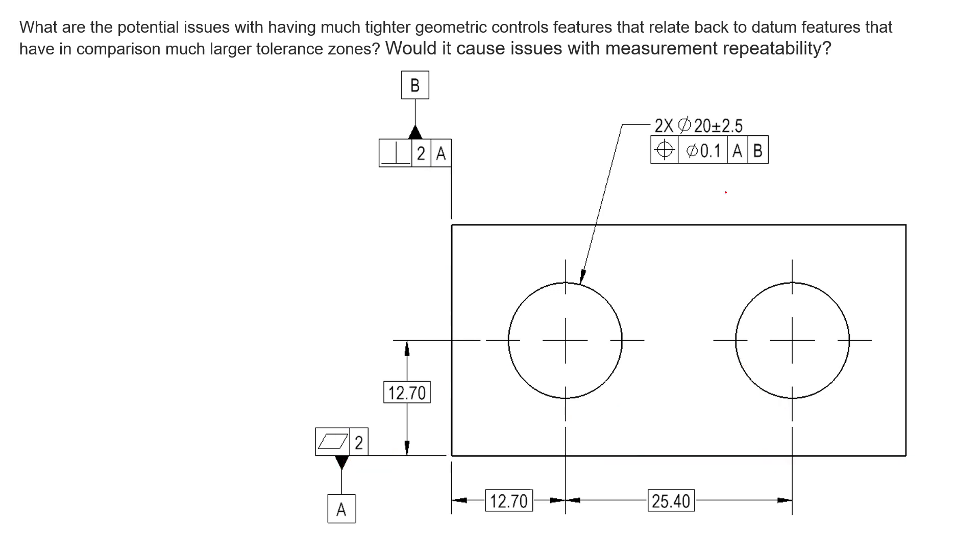Let's break down each feature control frame and what the interpretation is. First, out of the gate, this one's saying this bottom surface here, if it has any flatness error, that flatness error has to be less than two millimeters. So if it looks something like this, we have to be inside this zone of two millimeters. As long as the high point to the low point isn't more than two millimeters, we've met specification for flatness.